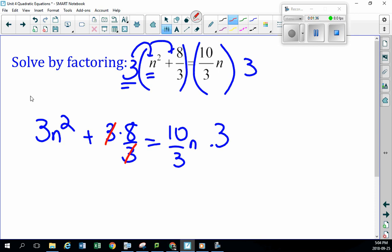This equals to 10 over 3n times three. And again, cancellation law, baby, look at that. That's gone as well, leaving you 3n squared plus, there's that eight, equaling to, oh, 10n. Now, the nice thing about this, it's very, very straightforward and simple.